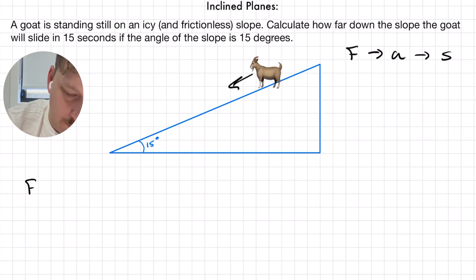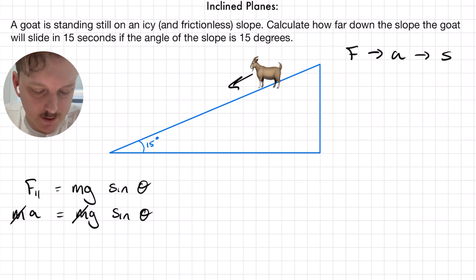So, step one. The force experienced by the goat is the force parallel, and that's going to be equal to mg sine of theta. I haven't given the goat's mass here, but that's okay, because that force is also equal to ma. So, in this case, our masses will just cancel. We have a equals g sine theta. Now, we're going to use g as 9.8, and that gives us our acceleration.